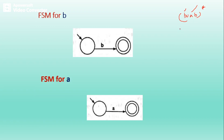Now you need to know the precedence among the operators used in regular expressions. The operators are star, union, and concatenation. The order of precedence is: first star, next concatenation, and third union. Now, once FSMs for B and A are constructed, next we look at concatenation. Though we have star here, those operators are inside the parenthesis, so we need to handle them first.